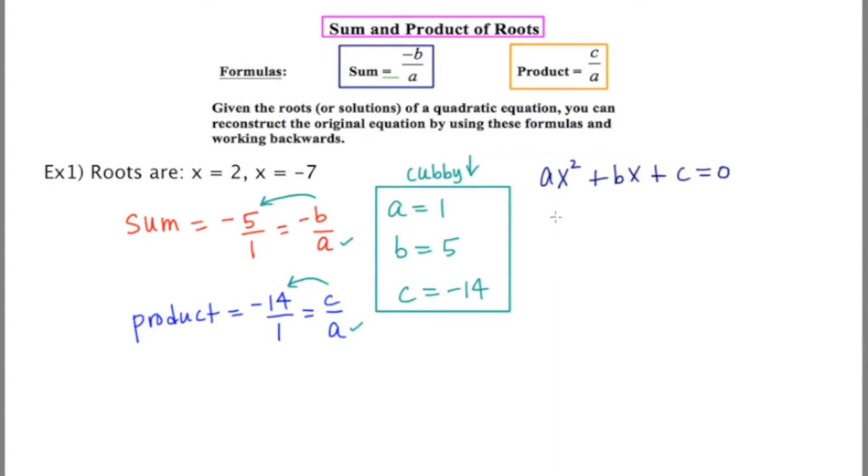Plugging in these values for those variables, we get 1x squared plus 5x minus 14 equals 0. What this means is if you are actually given this quadratic equation and you factored or used the quadratic formula on it, you would get as answers 2 and negative 7. What we're essentially doing is just working backwards, having been given those answers.